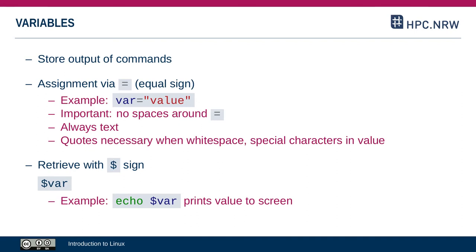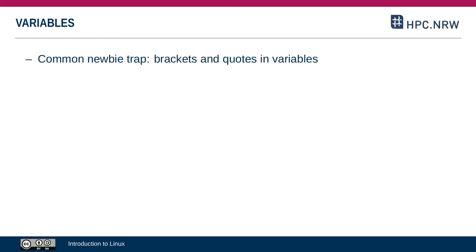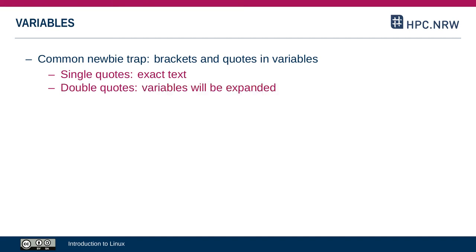If you just typed echo var without the dollar sign, it would actually print the literal text 'var'. That whole handling of variables with dollar signs is a bit tricky and hard to understand for beginners, especially when you combine it with quotes and different kinds of brackets. Single quotes give back the exact text, even if there are special characters like a dollar sign. Double quotes will expand variables inside the text string. And round brackets — also called parentheses — are used in combination with the dollar sign to evaluate commands.